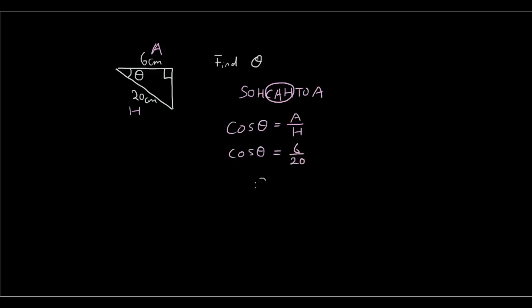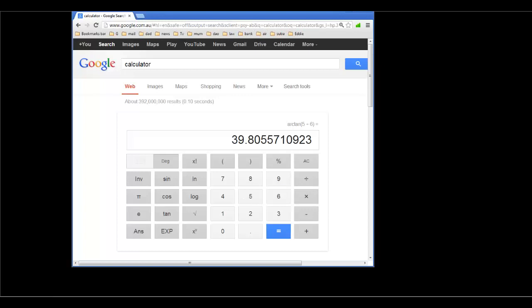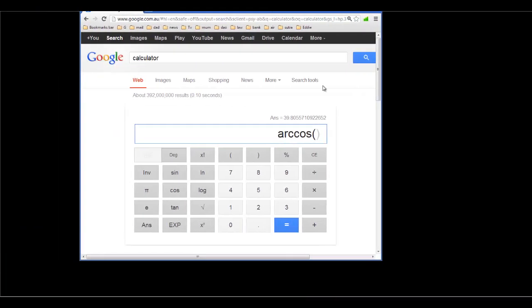And now we rearrange the equation to make θ the subject by doing an inverse cosine function on the other side. So inverse cosine bracket 6 over 20 equals. And put that in your calculator. So inverse cosine bracket 6 over 20. And you have 72.5 degrees.